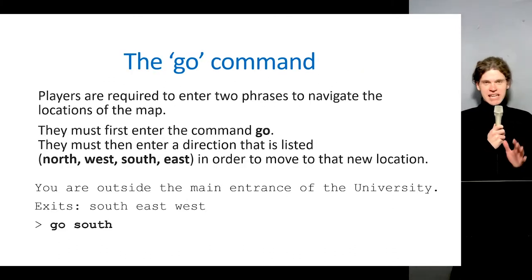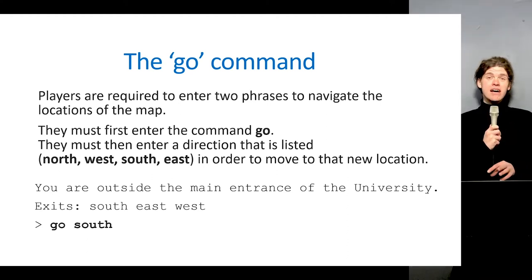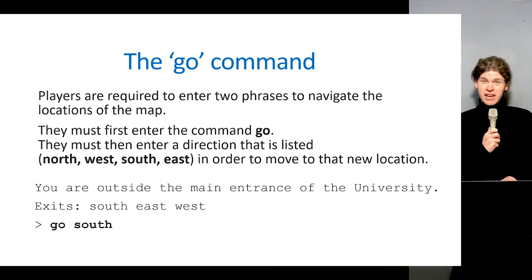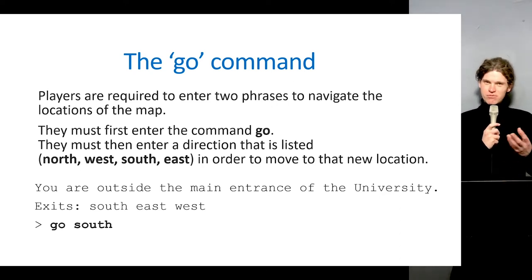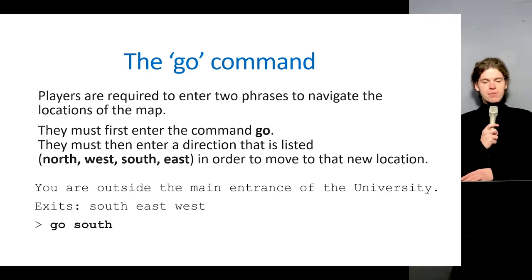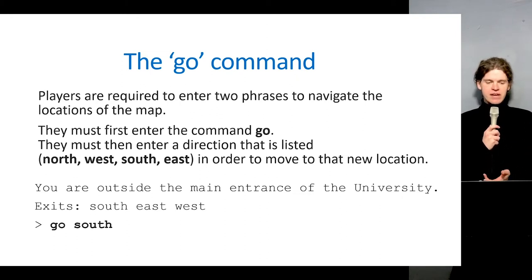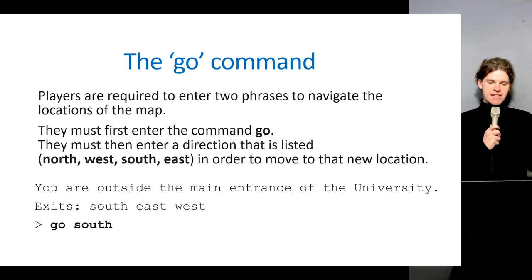Some basics of the game you need to be familiar with are the different commands you type in on the interface to navigate around the map of locations. One important command is the go command. We've got some code set up for you which will interpret this — same as the original game — where you type the keyword go followed by a direction, and we see a sample output at the bottom of the slide.